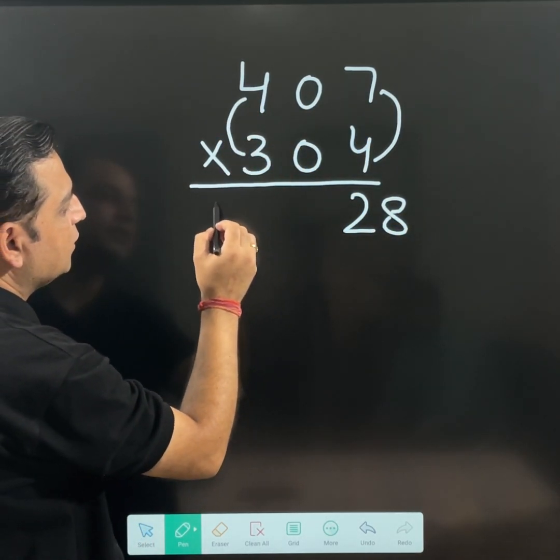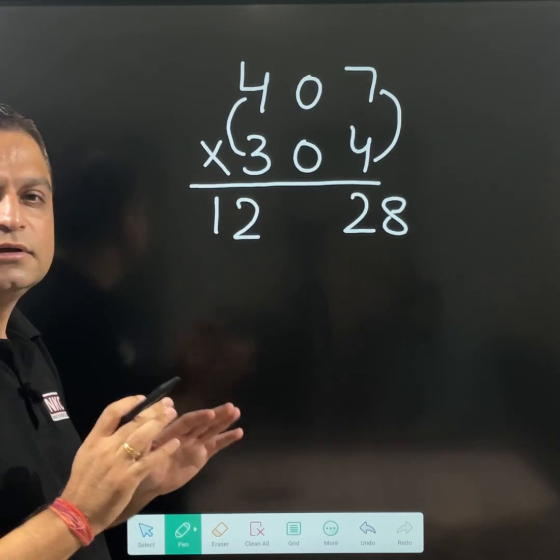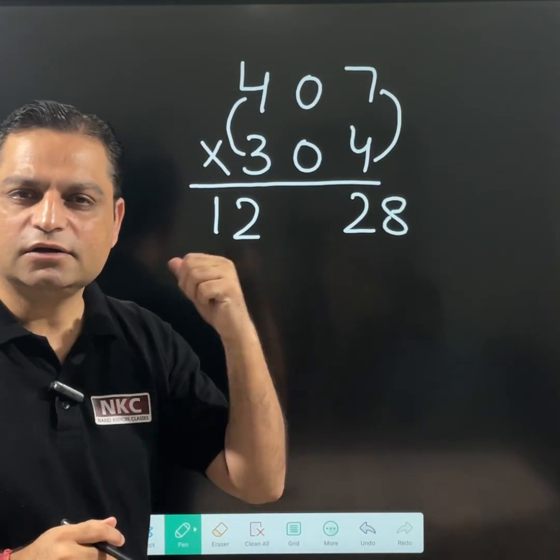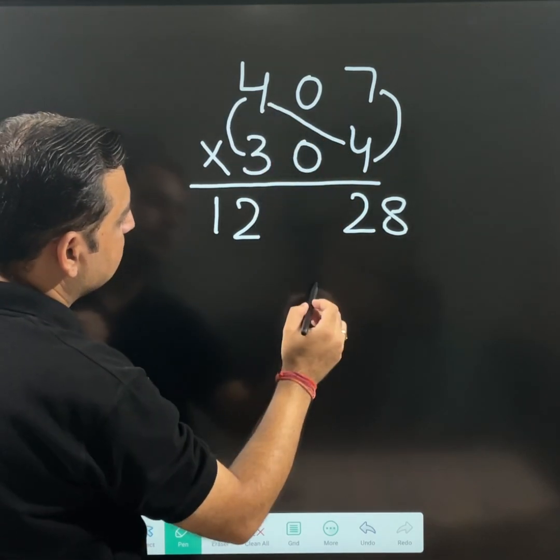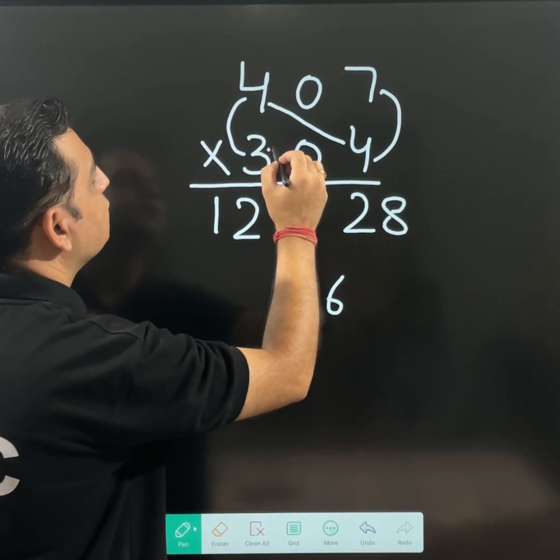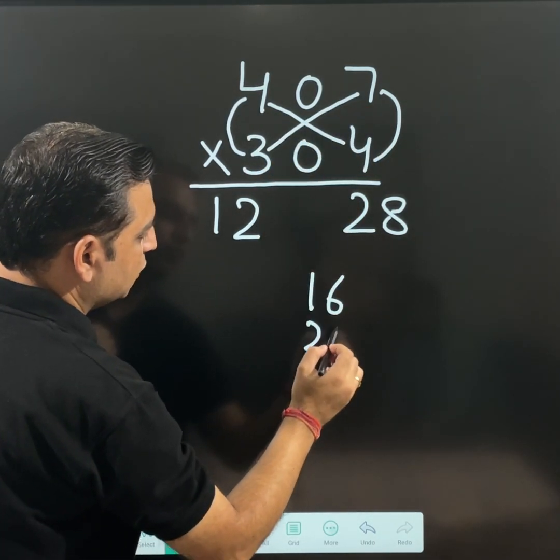4 multiplied by 3 is 12. The point is, what would be the middle term? Multiply them: 4 multiplied by 4 is 16, 3 multiplied by 7 is 21.